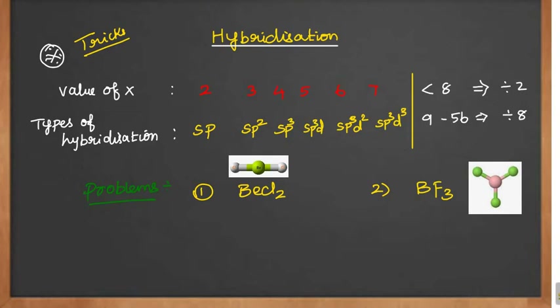If the value of x is equal to 2, then the hybridization is sp. If the value of x is 3, then sp2. 4 means sp3, 5 means sp3d, 6 means sp3d2, 7 means sp3d3. If you are getting the value lesser than 8, you have to divide it by 2.